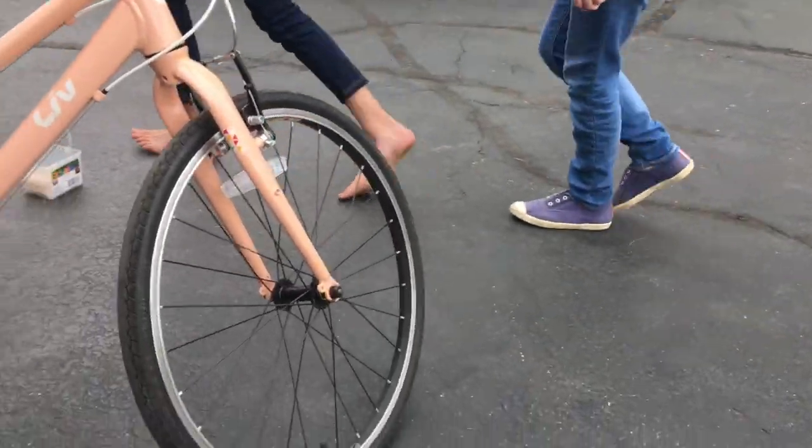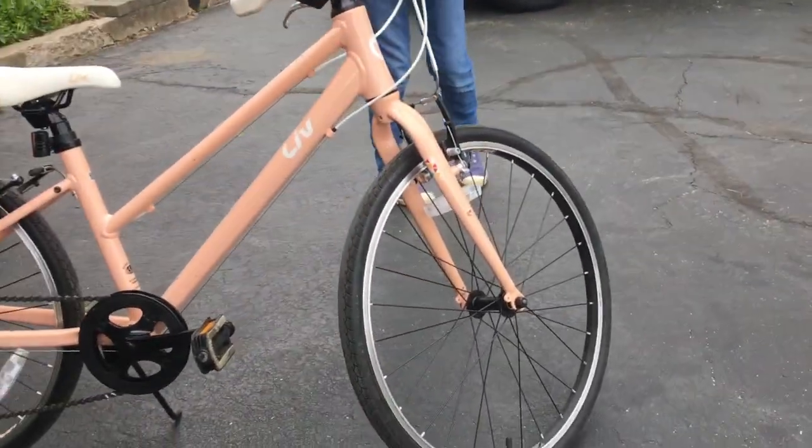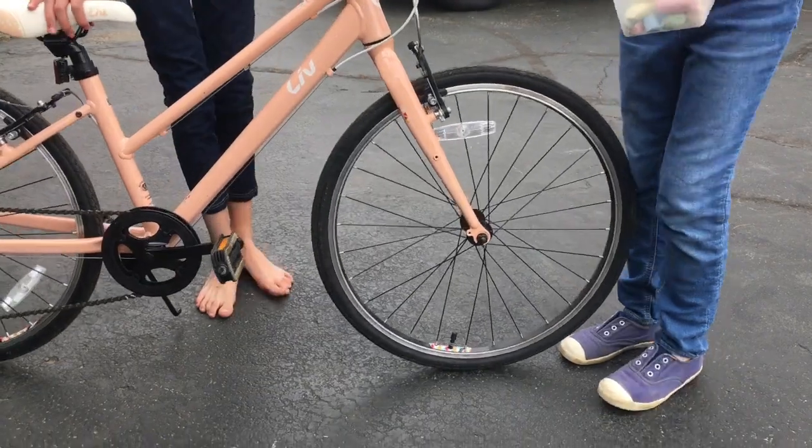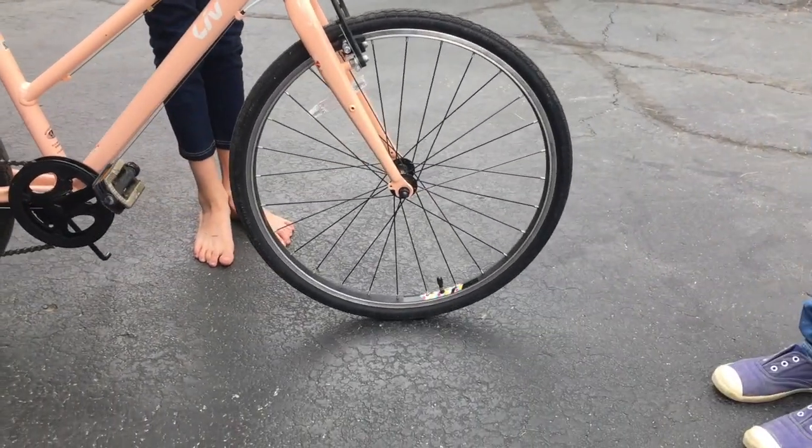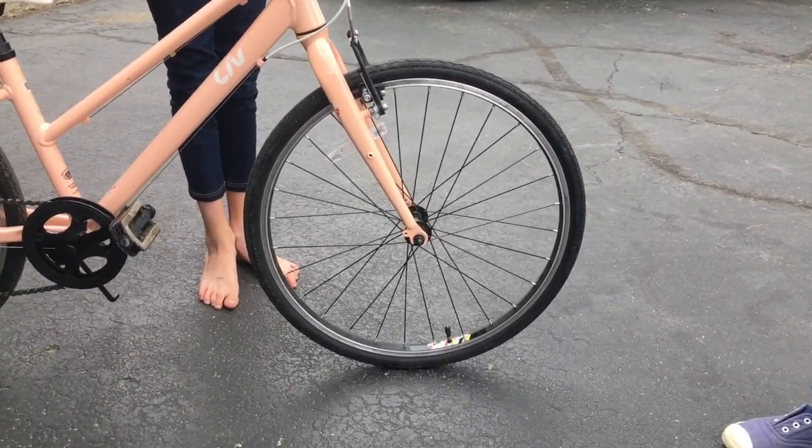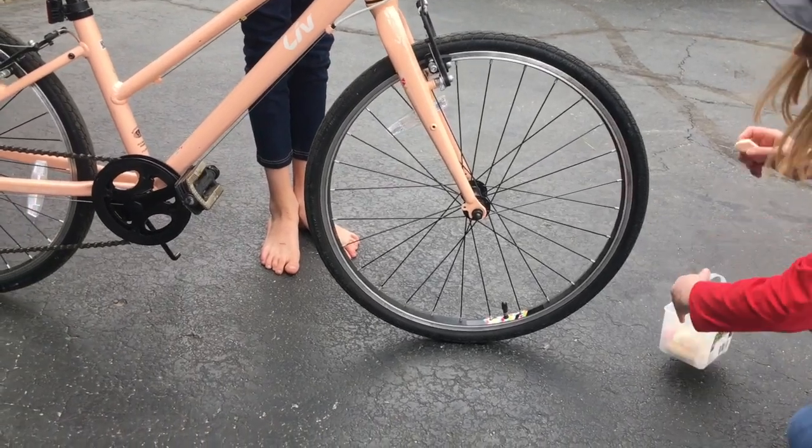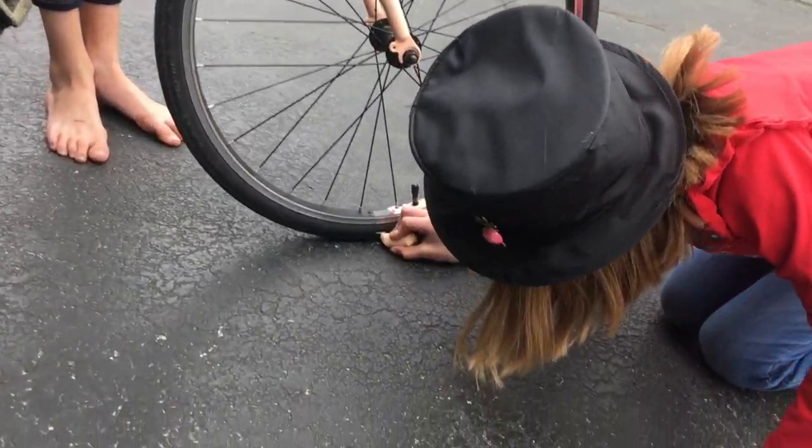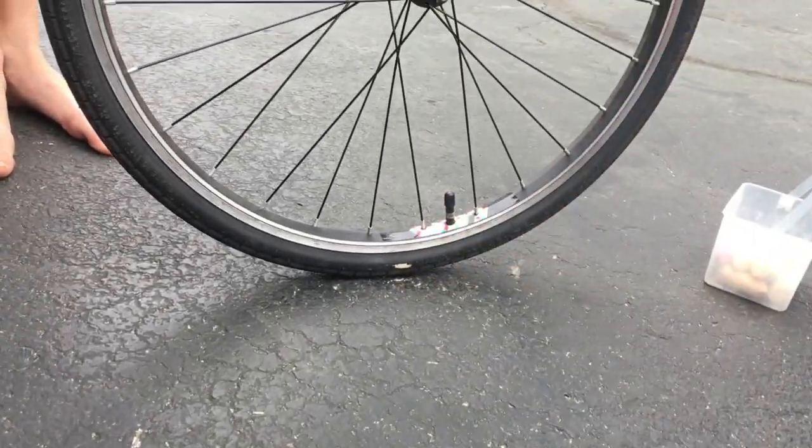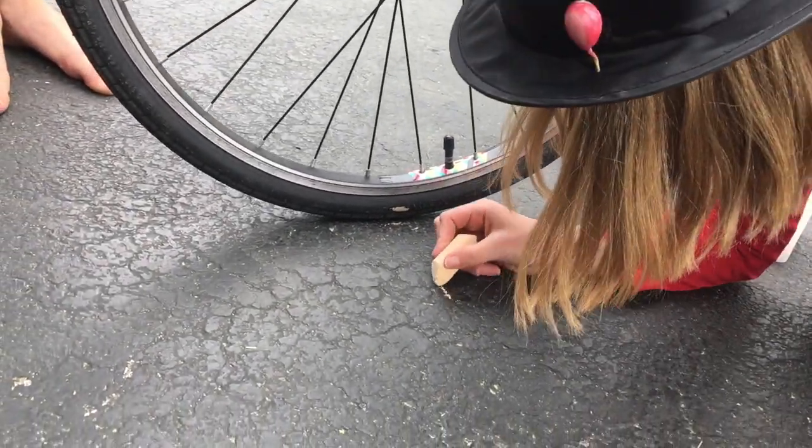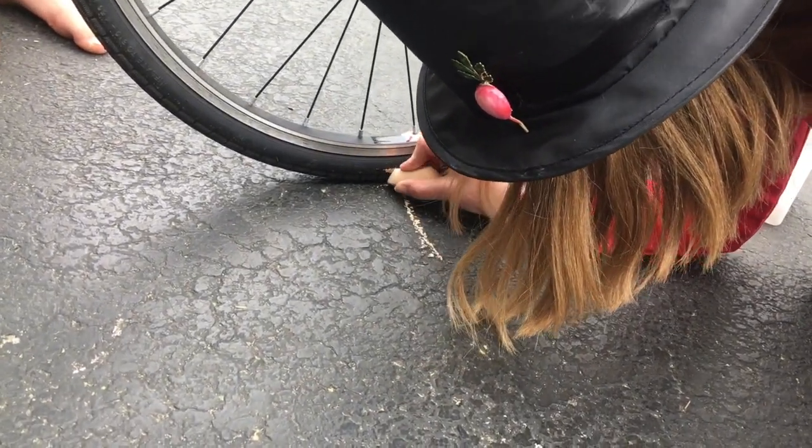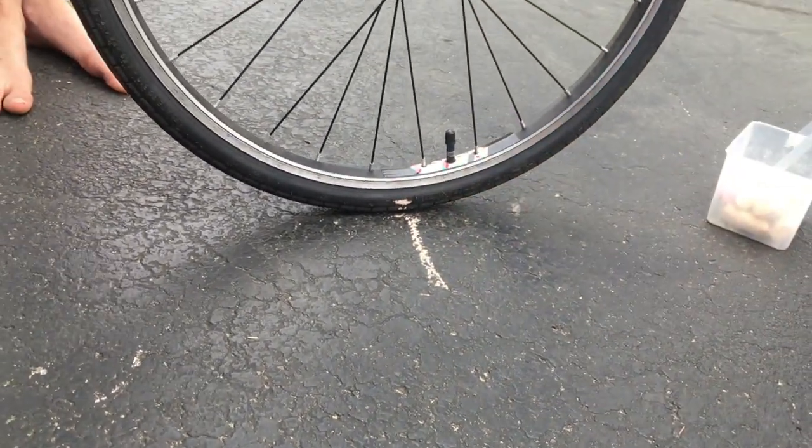Now Sienna, will you please hold the bike up? Libby, put a mark on the bottom of the tire that's touching the ground so we can see it really well, and then draw a line on the ground. That's our starting point.